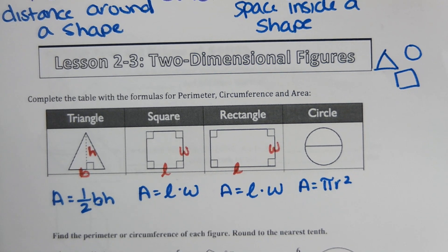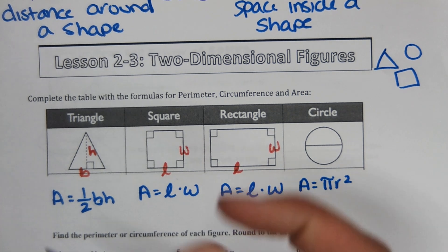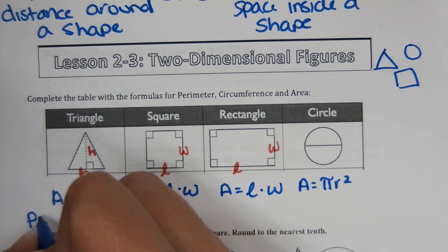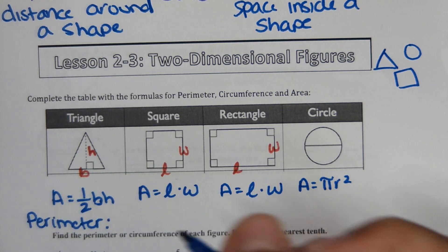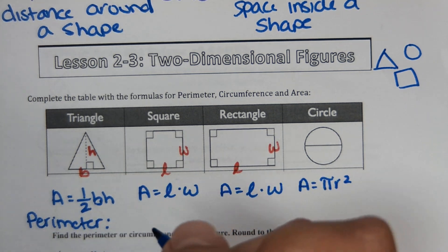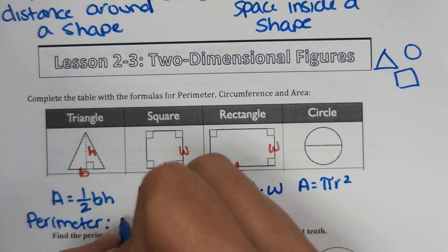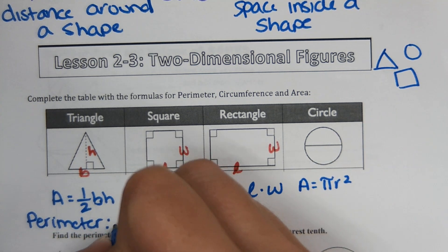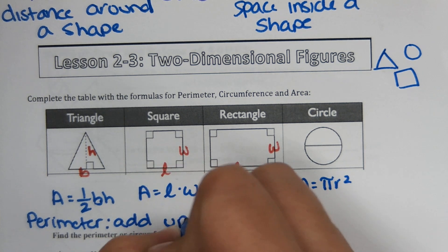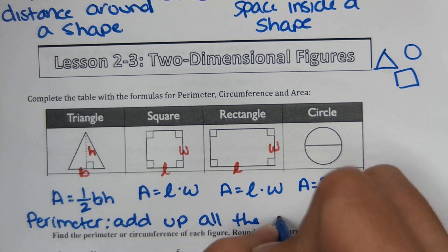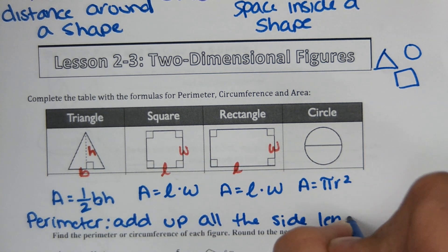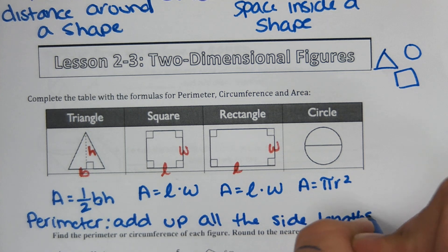It also says to write the formulas for perimeter. Perimeter is just the distance around the shape, so for perimeter you just add up all the side lengths, and that gives you the perimeter.